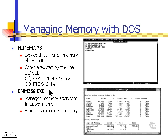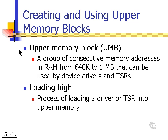emm386.exe is another file. It manages memory addresses in upper memory and can also be used to emulate expanded memory. We have to free up some special memory spaces — this is called the upper memory block. The upper memory block is a group of consecutive memory addresses in RAM from the 640K to the 1MB area, but not the entire 384K of the upper memory area, just a space that is contiguous. Loading high is the process of loading a driver or a TSR into that upper memory area.